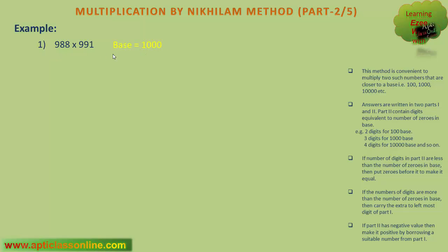Secondly, we have to find out that what is the difference between the base and the number. 988 is how much less than its base? It is 12 less than 1000. And in the same way, 991 is 9 less than 1000. In the first part, we will write the difference of either 988 and 9, or 991 and 12, and it is 979. So in the first part, we will write 979. And in the second part, we will write the multiplication of 12 and 9, that is 108.